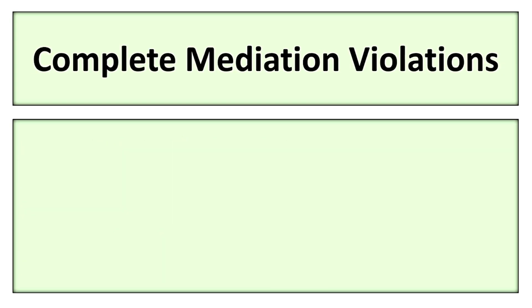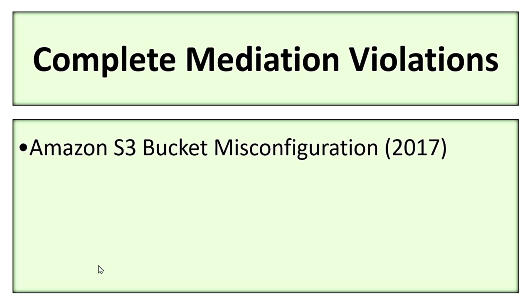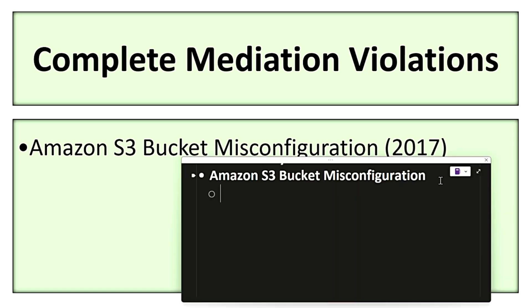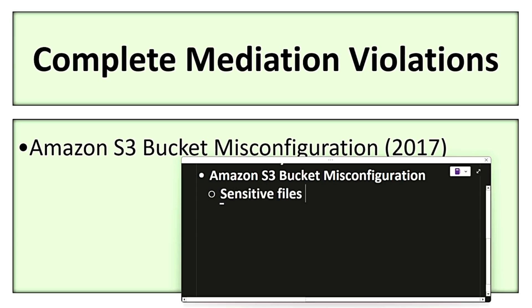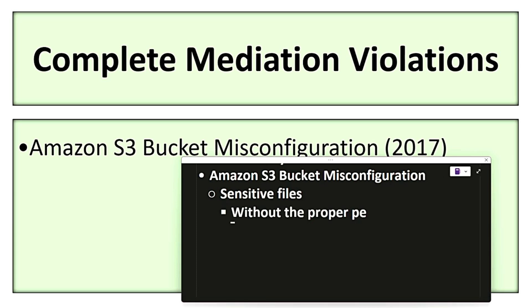Now let's see some real-world examples of complete mediation violations. First is the Amazon S3 bucket misconfiguration in 2017. The misconfiguration allowed sensitive files from companies like Accenture to be accessed without proper permissions, despite access control settings being updated. The system failed to continuously recheck permissions on each request, allowing unauthorized users to gain access.